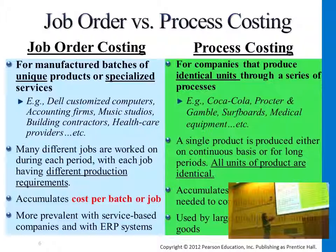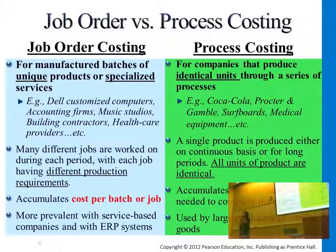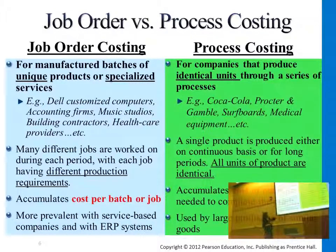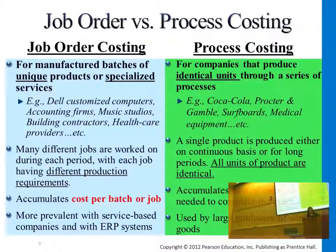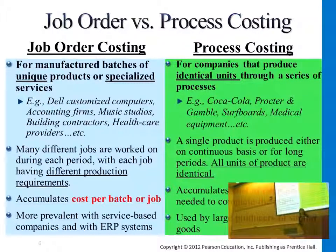We're focusing today and Friday on job order costing system. For customized services and customized products, it makes more sense to calculate the cost per order instead of unifying the cost from different orders, because all of them are different. We accumulate cost per batch per job, instead of separating cost per process. That's the main difference. Customized services and customized products fall under job order costing. Non-customized, identical, vastly produced products fall under process costing.